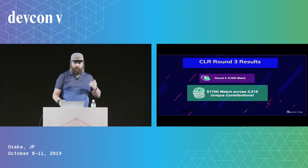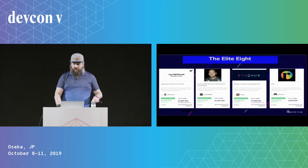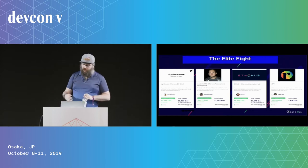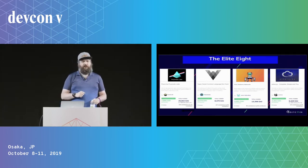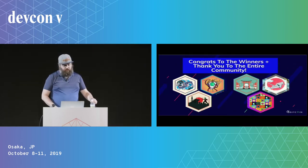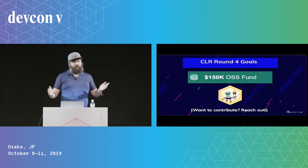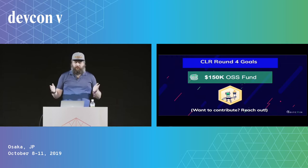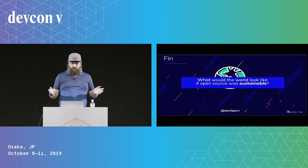Round three results: $100,000 in matching funds and $170,000 across 2,216 unique contributions. The Elite Eight were Lighthouse, Austin Griffith, ETH Hub, RDI, Prism, Vyper, the Gas Stations Network, and ethers.js. Congratulations to the winners. We're excited for the next round — our goal is to raise $150,000 for our open source sustainability fund. If you want to contribute, reach out to me, Kevin Owocki, Aditya, or any of the Gitcoin team members.